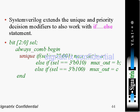SystemVerilog also extends the 'unique' and 'priority' decision modifiers to work with the if statement. For example, 'select' is a three-bit vector of bit data type used inside combinational logic. You can use 'unique if' — just as we discussed 'unique case', you can also use 'unique' with an if-else statement.